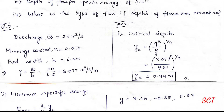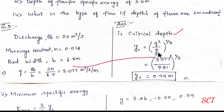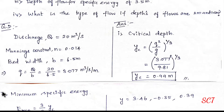First we need to find out critical depth. Critical depth formula: Yc equals q² divided by g, whole to the power 1 by 3. q value is 3.007, g value is 9.81. So to the power 1 by 3, critical depth Yc equals 0.99 meter.